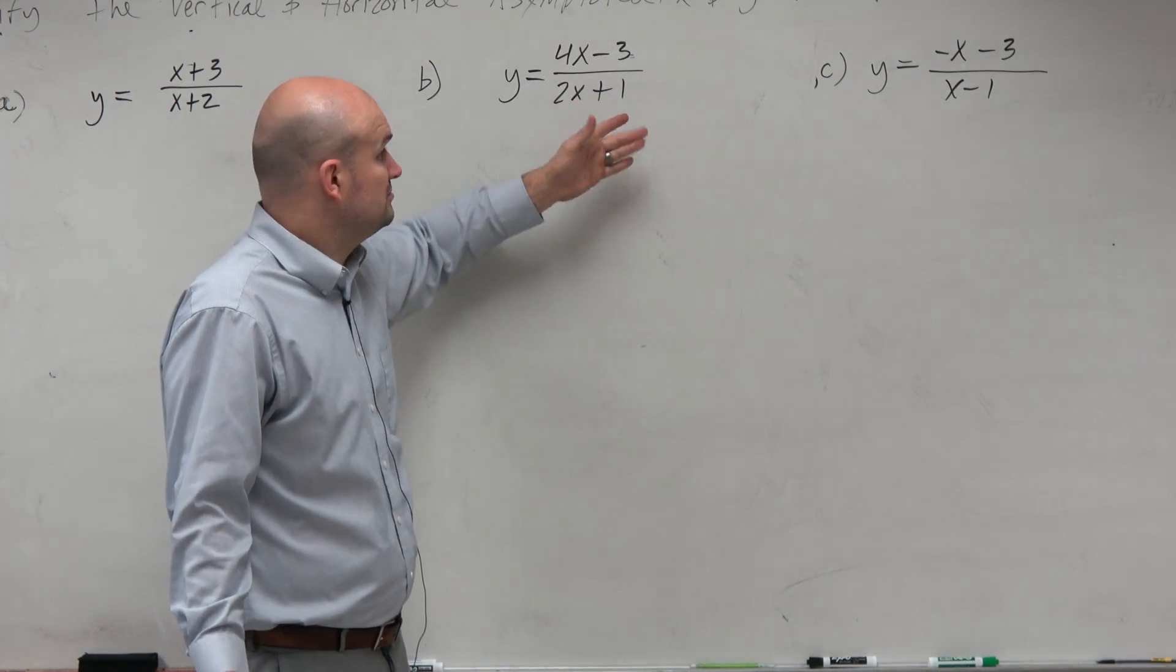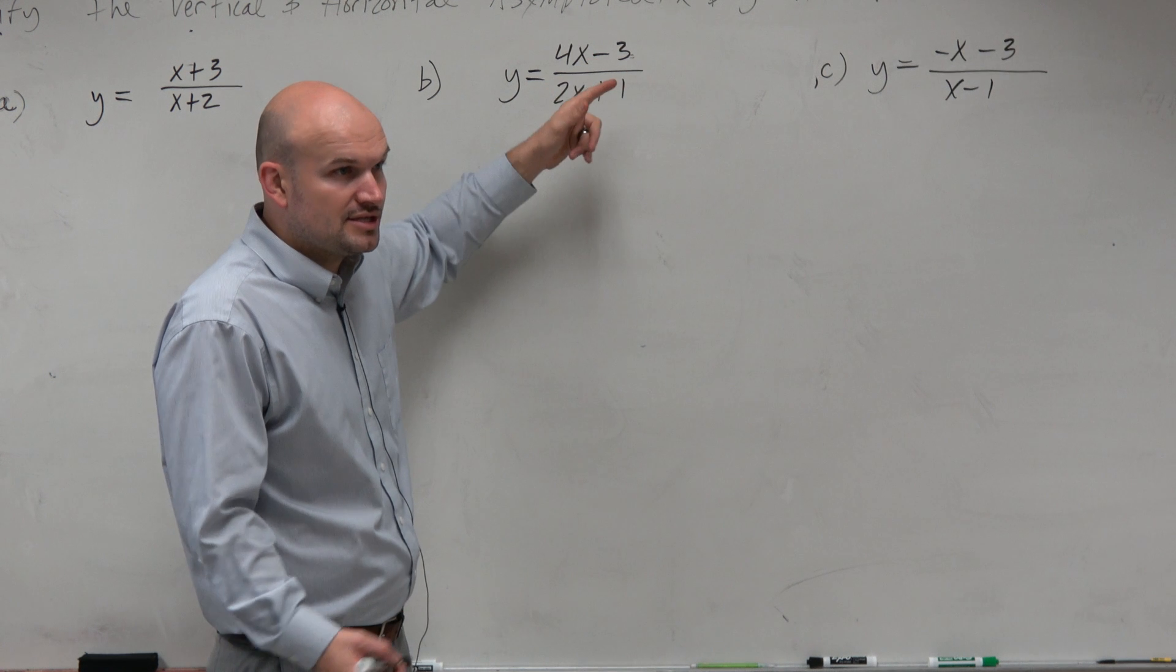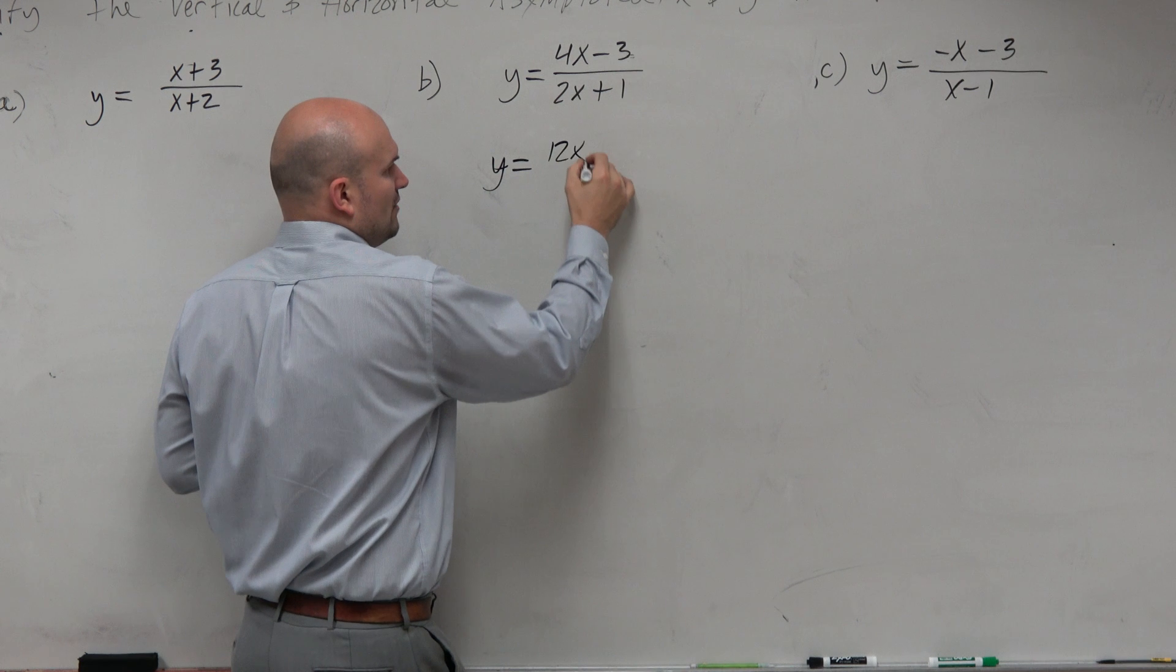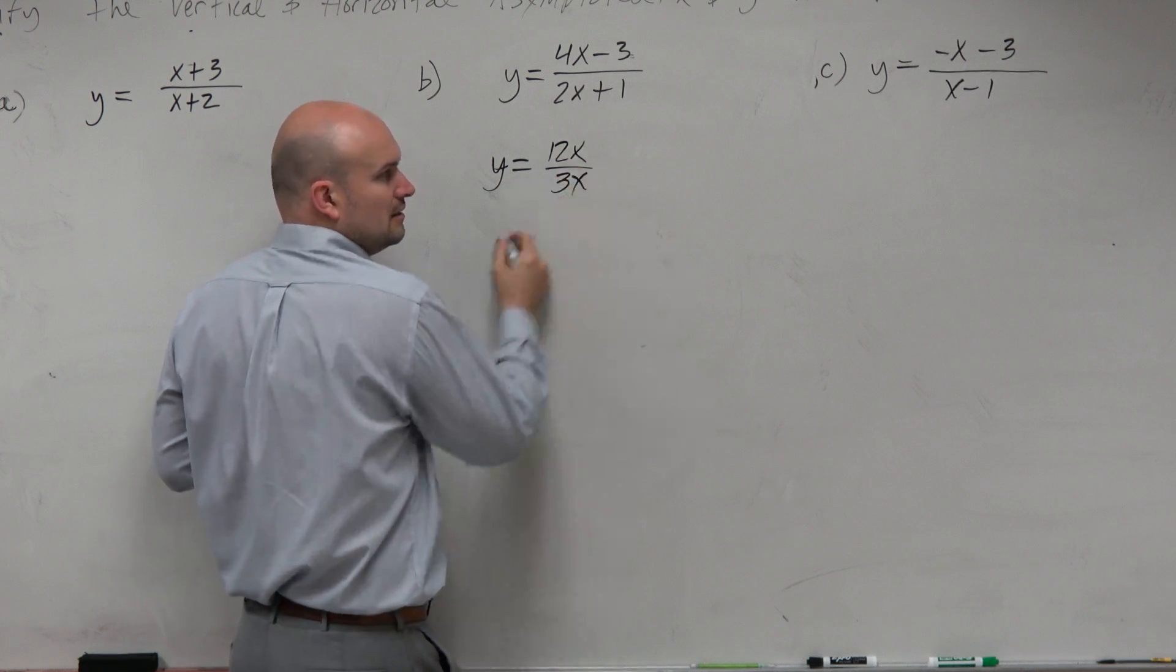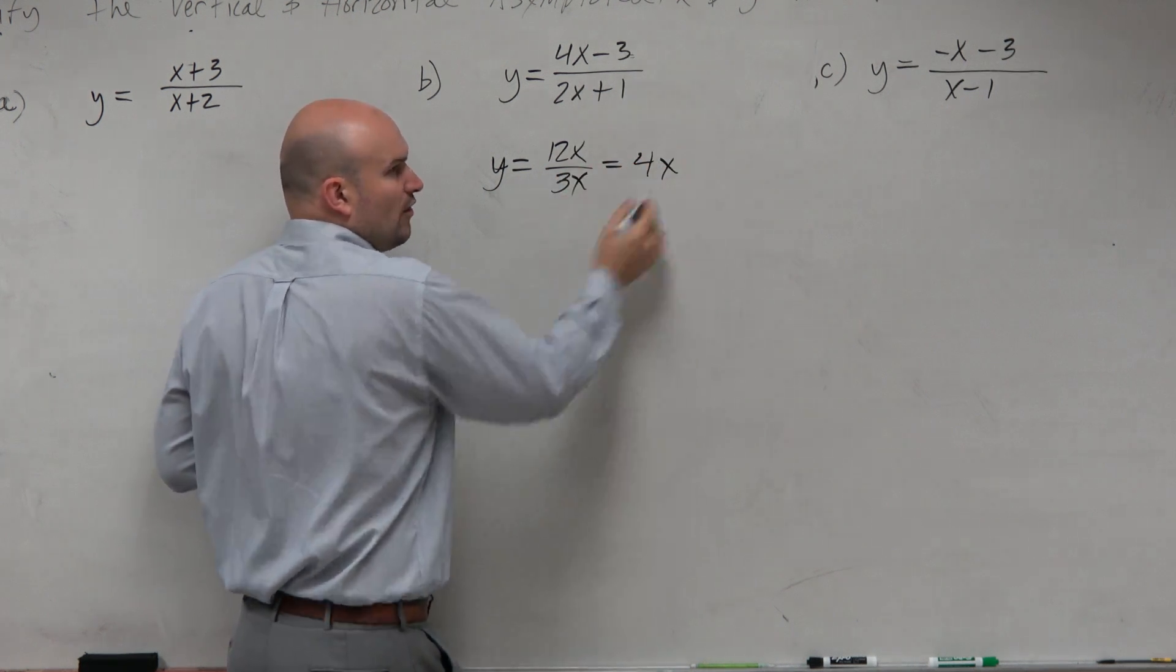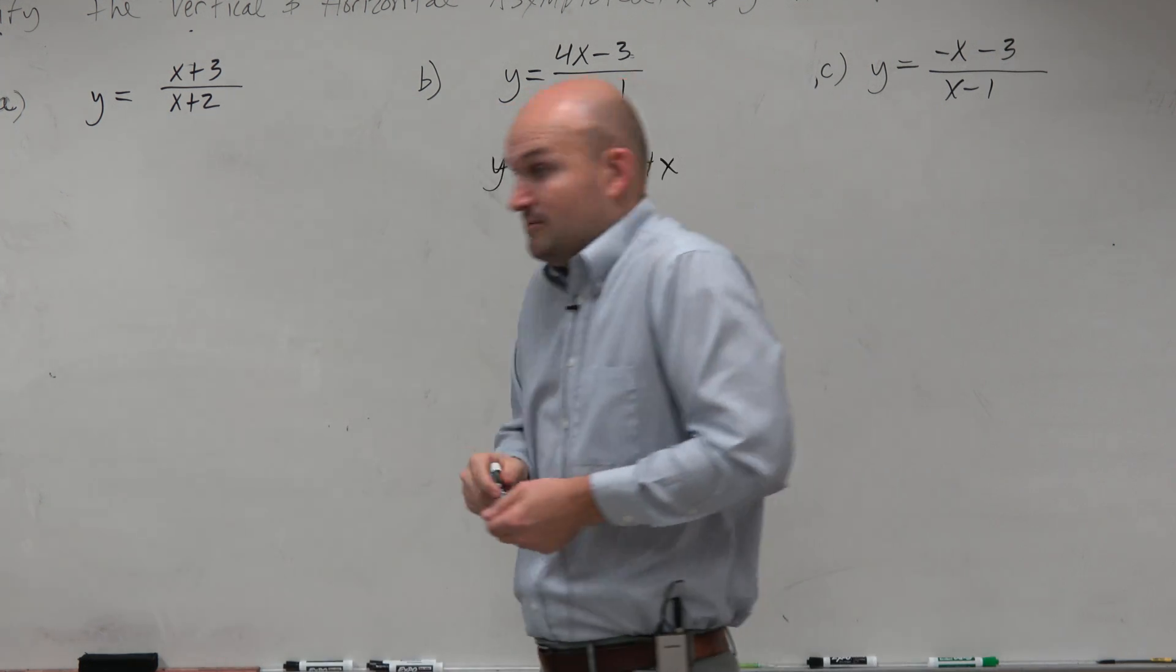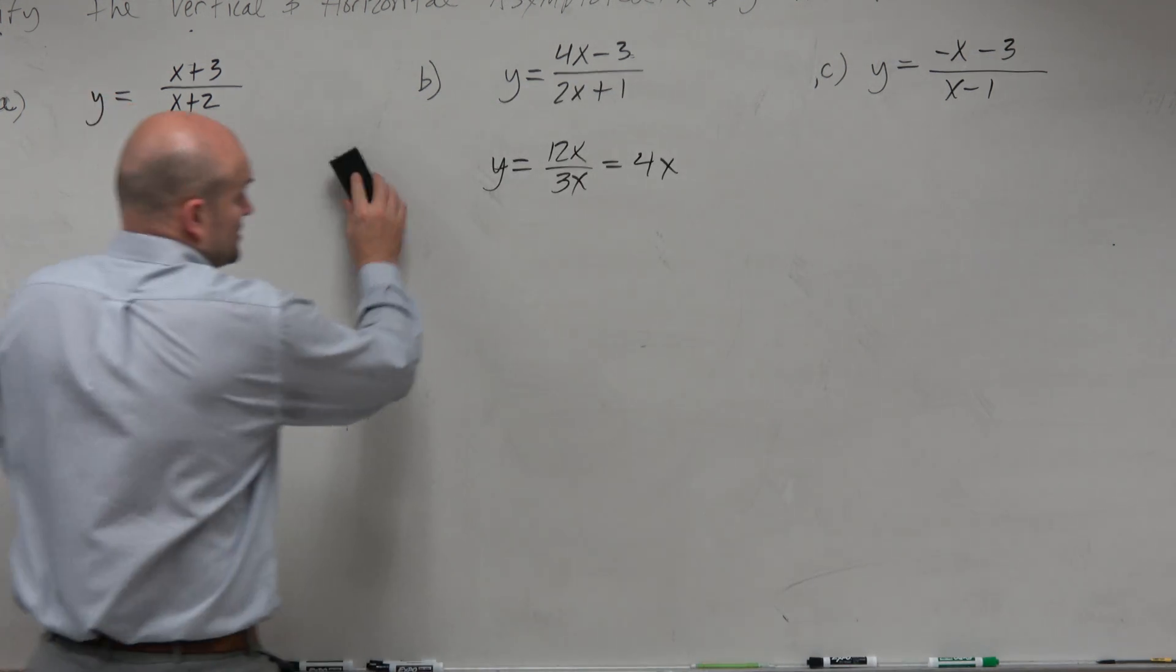I mean, they both have the same degree, right? Kind of the same thing, like if you had y equals 12x over 3x, that's just the same thing as saying 4x, right? So why don't we try to divide it and see what it looks like? I mean, why not? What do we got to lose? We don't know what this graph looks like right now anyways.